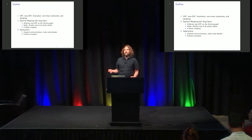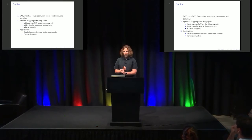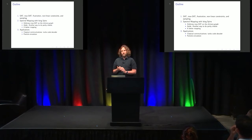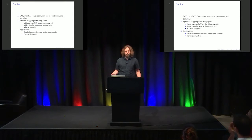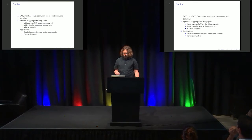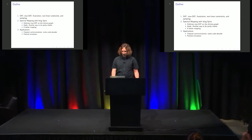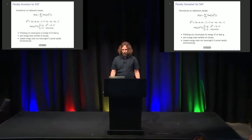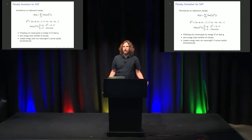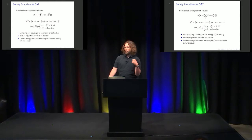I'll talk about spectral mapping with Ising spins, and then briefly go over two applications: one for decoding a turbo code, which is a way of encoding classical information like for a cell phone, and another which is quantum particle simulation. But first, let's talk about what we're not doing, which is the penalty formalism for SAT.